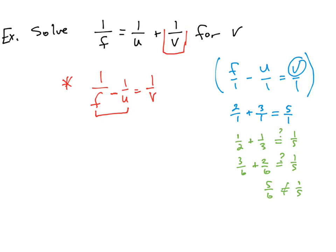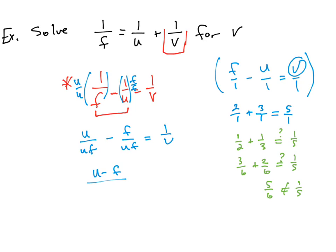The common denominator is uf. Multiply the first fraction by u over u and the second by f over f, giving u over uf minus f over uf. Writing this as a single fraction: (u minus f) over uf equals 1 over v. Now we can take the reciprocal of both sides: uf over (u minus f) equals v.